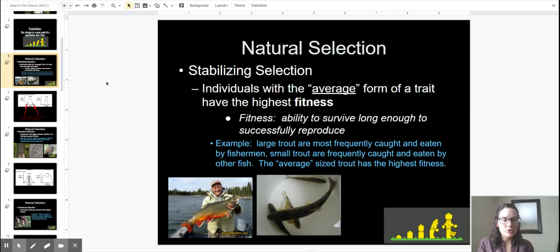An average size fish, I catch that fish I'm going to say, not really a keeper, I throw him back. Another fish out in the lake is going to swim past it and say, a little bit too big, not worth my time. So the average sized fish is going to have the highest fitness. It's going to be the one that is most likely to survive long enough to successfully reproduce and then pass those genes on to the next generation.